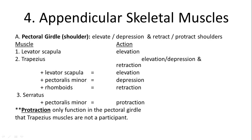On the appendicular skeletal muscles — looking at the appendages — the levator scapulae and trapezius are important for elevating the arm, including elevation, depression, and retraction. Those are assisted by the levator scapulae, pectoralis minor, and rhomboids. The serratus and pectoralis minor help with protraction, and this is the only action that the trapezius muscles are not involved in.